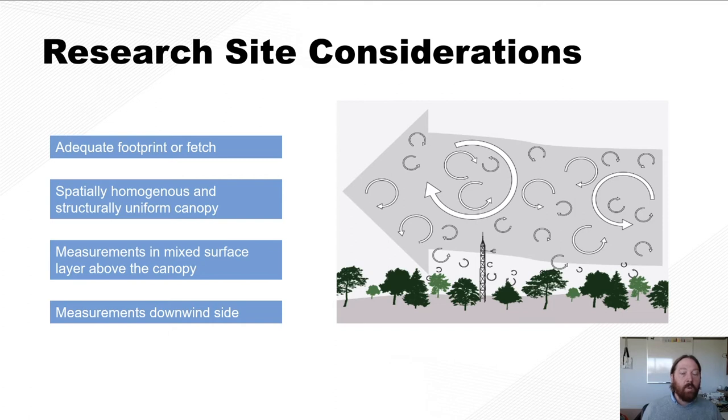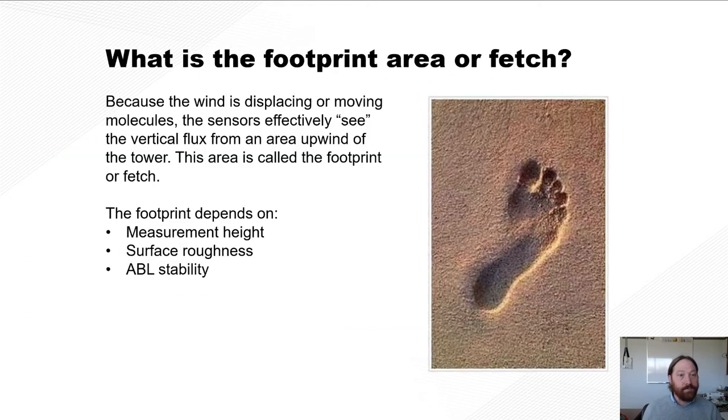And that the measurements are on the downwind side of your zone of influence. So in other words, what you want to measure is upwind of your tower, and your sensor is placed downwind of that.